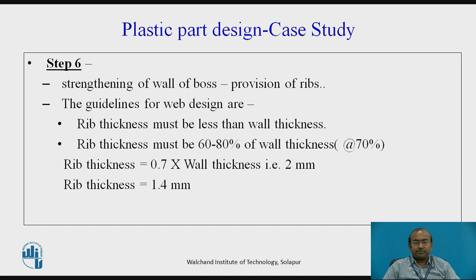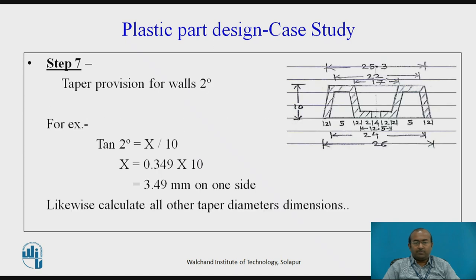The guidelines for rib/web design are as follows: the rib thickness must be less than the wall thickness — about 60–80% of wall thickness; let us consider 70%. So rib thickness = 0.7 × 2 mm = 1.4 mm. Taper provision for the walls from the ready-reckoner is 2 degrees. For example, tan 2° is used, and the x-dimension is calculated as x/10, giving 3.49 mm on one side. Likewise, all taper diameters are dimensioned.